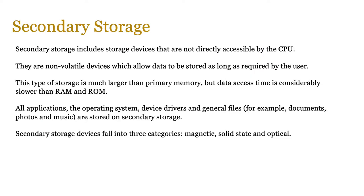Let's look at secondary storage. These are devices which are not directly accessible by the CPU. If a storage device is directly accessible by the CPU, it falls into primary storage — so RAM and ROM. Secondary storage devices are non-volatile, often very slow, and allow data to be stored as long as required by the user. The storage capacity is quite large because it's a slow storage, so you get a lot of quantity as well.